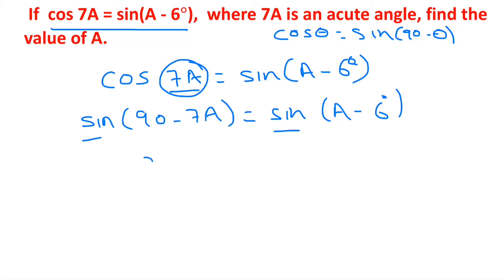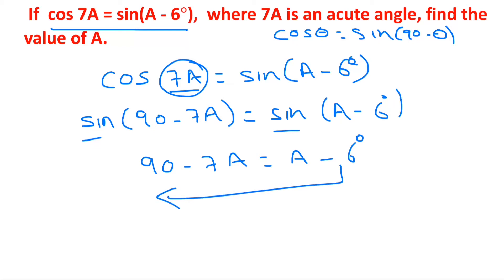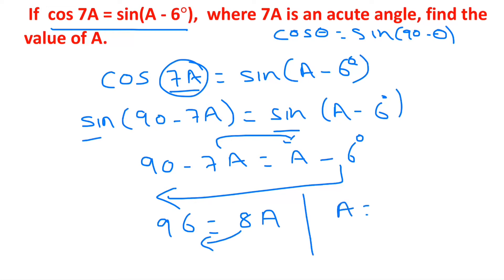We eliminate sin and write 90° - 7a = a - 6°. Transposing: 90° + 6° = a + 7a, so 96° = 8a. Dividing both sides by 8, the value of a is 12°.